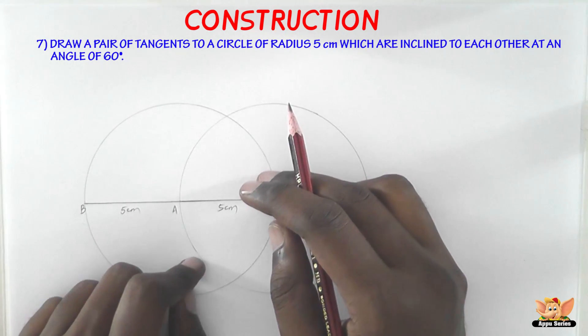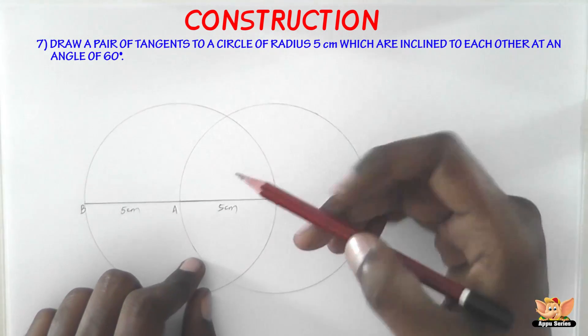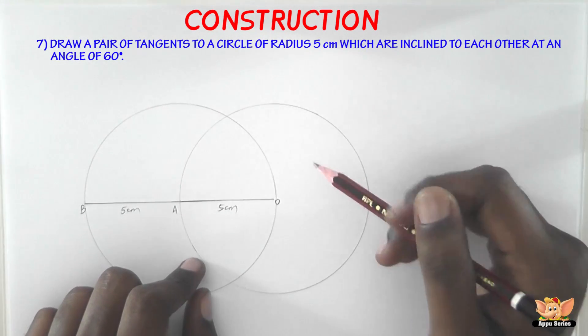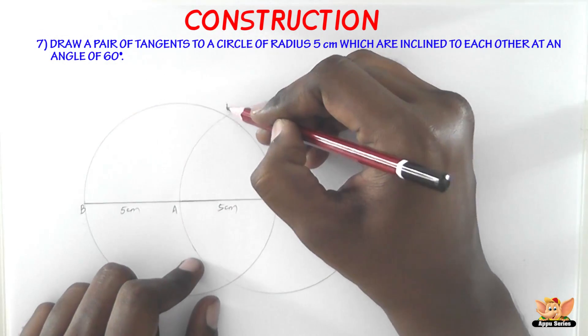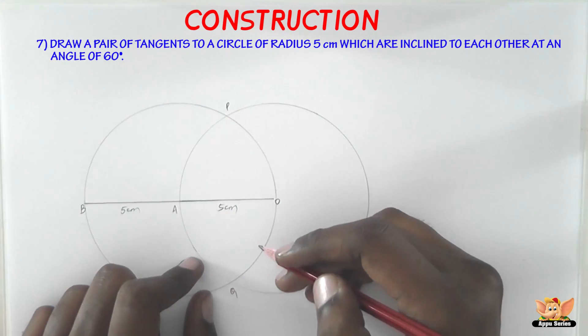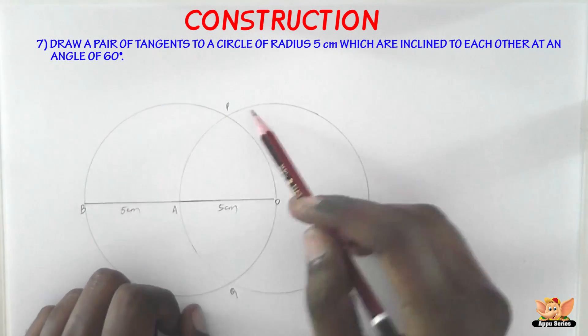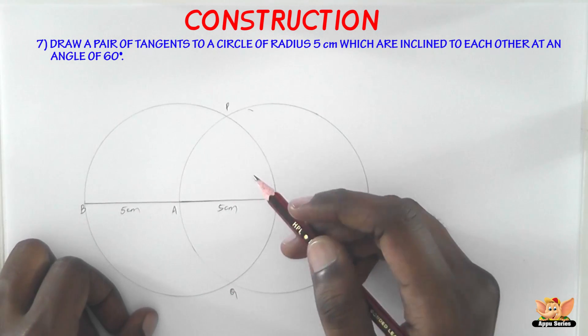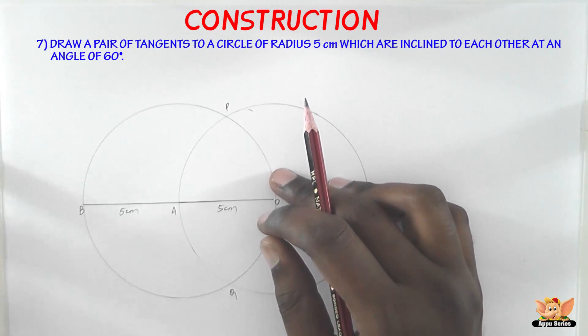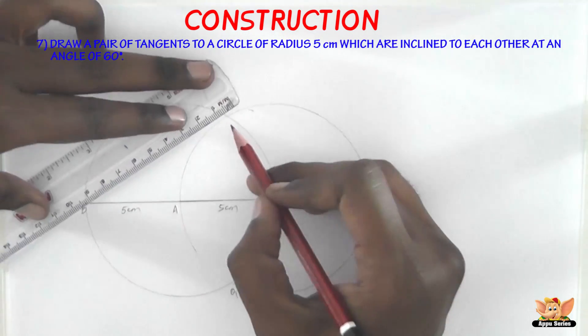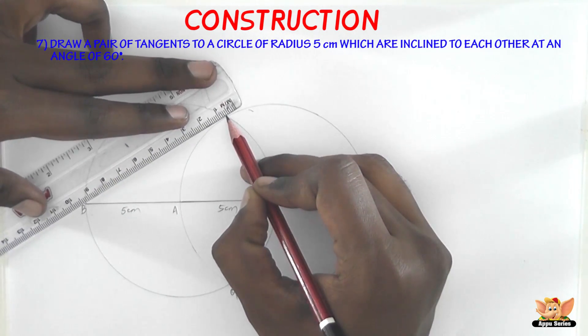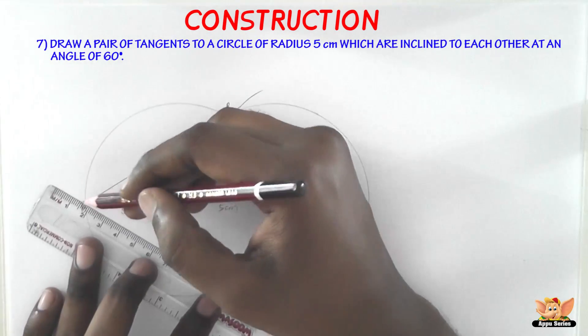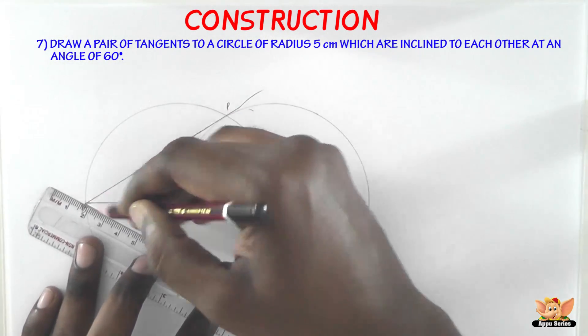Now the next step is: suppose it cuts the circle drawn in step 1 at P and Q. Let's take this as P and this as Q. Now join BP and BQ and get the desired tangents. That's all. So all we have to do is join BP and BQ.